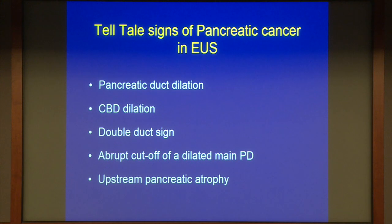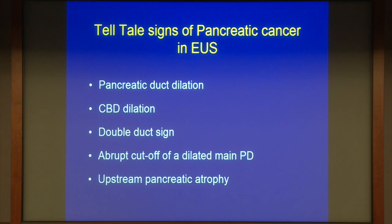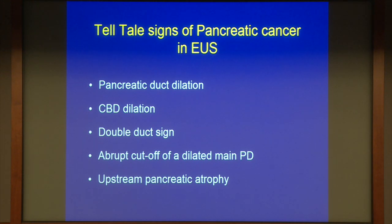Most often on EUS, as well as CT, we'll have typical features of a pancreatic mass to diagnose. But we need to take into account certain signs which will help lead the diagnosis, especially when the tumor is very small or subtle — these tell-tale signs. When I do an EUS, I look for pancreatic duct dilation, common duct dilation, and sometimes both, which is even more ominous. If the pancreatic duct is dilated, you look for abrupt cutoff or a transition point, and most often these patients have distal pancreatic atrophy.